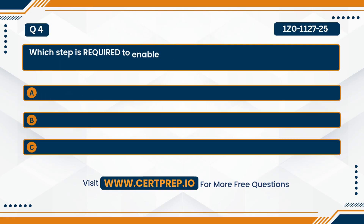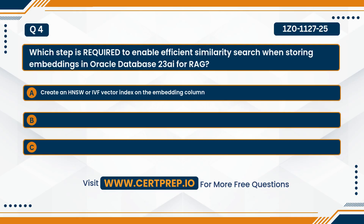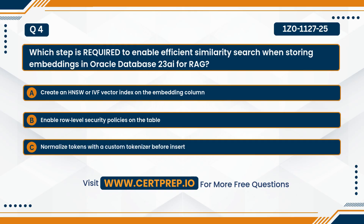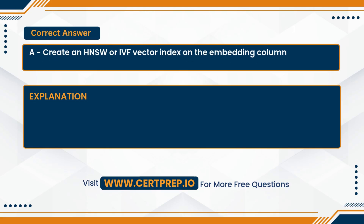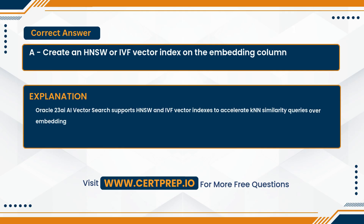Question four. Which step is required to enable efficient similarity search when storing embeddings in Oracle Database 23AI for RAG? A. Create an HNSW or IVF vector index on the embedding column. B. Enable row-level security policies on the table. Or C. Normalize tokens with a custom tokenizer before insert. The correct answer is A — create an HNSW or IVF vector index on the embedding column. Oracle 23AI vector search supports HNSW and IVF vector indexes to accelerate KNN similarity queries over embedding columns.